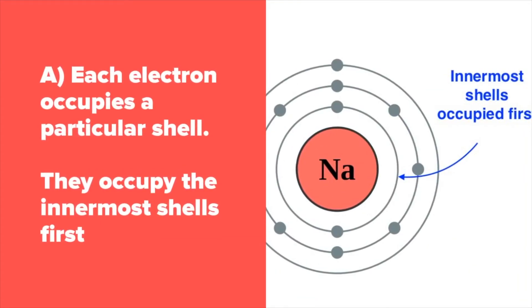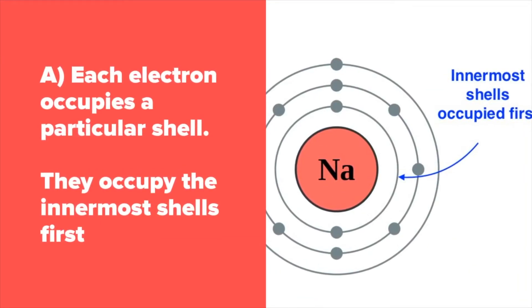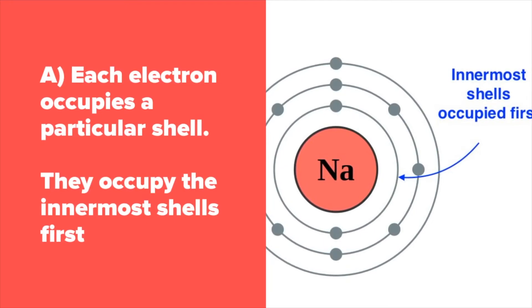Each electron in an atom occupies a particular shell. They start by occupying the innermost shells first.